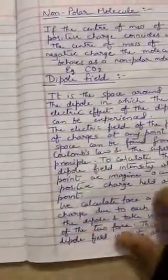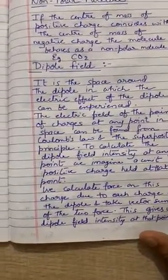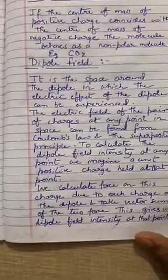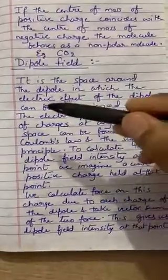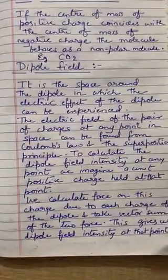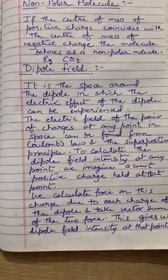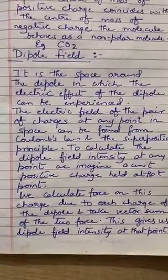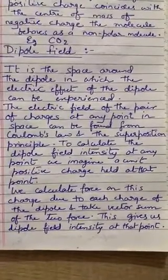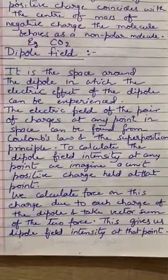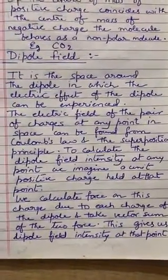The next topic is dipole field. Just as the space around a charge is known as an electric field, for the case of dipole field, it is the space around the dipole in which the electric effect of the dipole can be experienced. The electric field of the pair of charges at any point can be found from Coulomb's law, using the superposition principle to find the dipole field at any point.